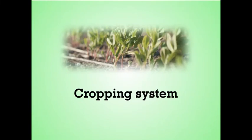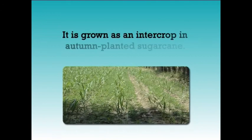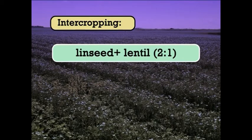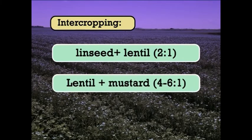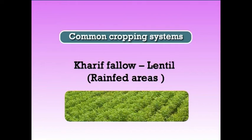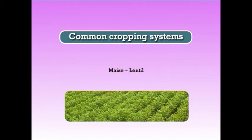Lentil is grown as an intercrop in autumn-planted sugarcane. Two lines of lentil may be sown 30 cm apart in the center of two sugarcane rows. In northeastern plains, it is also grown as an utera crop after rice. Intercropping of linseed with lentil at the ratio of 2:1 and lentil with mustard at the ratio of 4–6:1 is commonly followed. Other common cropping systems are kharif fallow followed by lentil in rain-fed areas, rice-lentil, maize-lentil, pearlmillet-lentil, sorghum-lentil, cotton-lentil and groundnut-lentil.